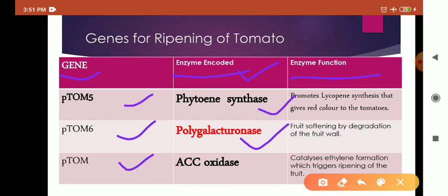The three enzymes here responsible are phytoene synthase, polygalacturonase, and ACC oxidase. We can clearly see that phytoene synthase promotes lycopene and gives the red color to the tomatoes. On the other hand, ACC oxidase catalyzes ethylene formation. Ethylene is a gaseous hormone responsible for ripening of any fruit. If we clearly see that this polygalacturonase enzyme is responsible for softening of fruit wall, we get our culprit. The main enzyme responsible for the early maturing, the bruises, and poor handling of tomatoes is polygalacturonase.